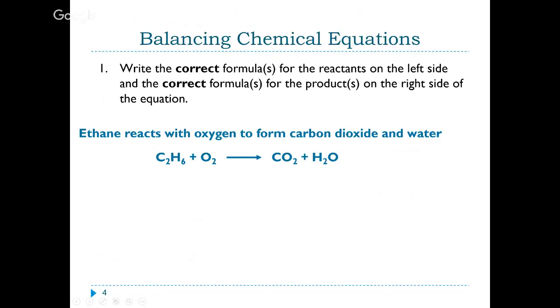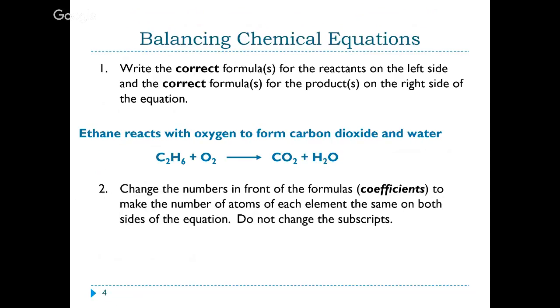When we start to balance our equations, we cannot change the subscripts, because if we change the subscripts, then we change the identity of the particular compound. So we use coefficients, which are numbers that go in front of a particular substance. If we put a two in front of something, that means we have two of those, or we would multiply all those atoms through by two. But once again, we absolutely never change the subscripts, and we never put coefficients in the middle of a compound. For example, I can't shove a number in between the C and O here to try and balance my oxygen. The only thing you're allowed to do is put numbers in front of respective compounds.